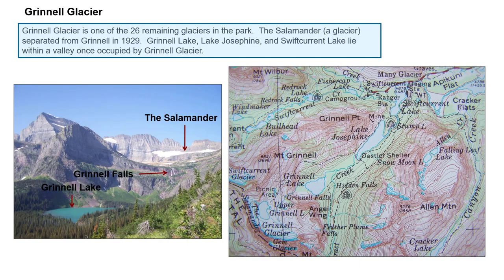We're specifically going to focus on two glaciers: Grinnell and Sperry. Here is the Salamander, which is a remnant of the Grinnell Glacier that used to occupy this whole cirque and valley — in fact even bigger than what you see in this photo. Grinnell Glacier is one of the 26 glaciers remaining in the park. Looking at this topographic map, here is the cirque you see in the photo. The contour interval is probably about 100 feet. The Salamander, being the remnant of Grinnell Glacier, used to fill the area now occupied by Grinnell Lake, down into Lake Josephine, and also down into Swift Current Lake. This entire region used to be filled with the Grinnell Glacier.